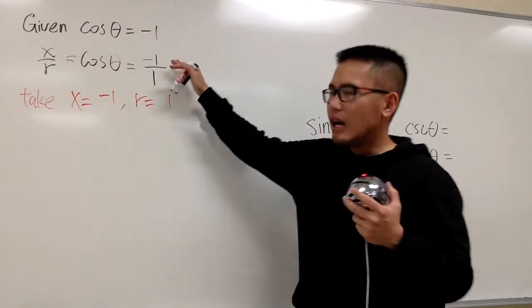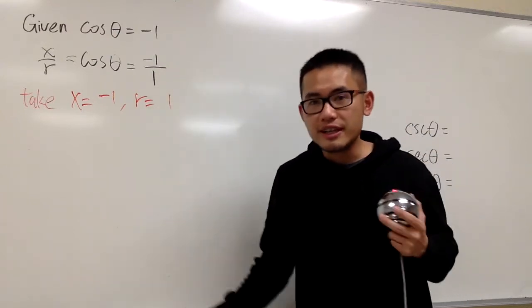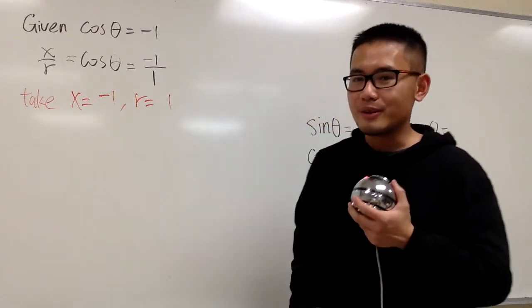And of course, you can also say, I could have looked at this as negative 7 over positive 7, I still end up with negative 1. But use the simplest number right here.